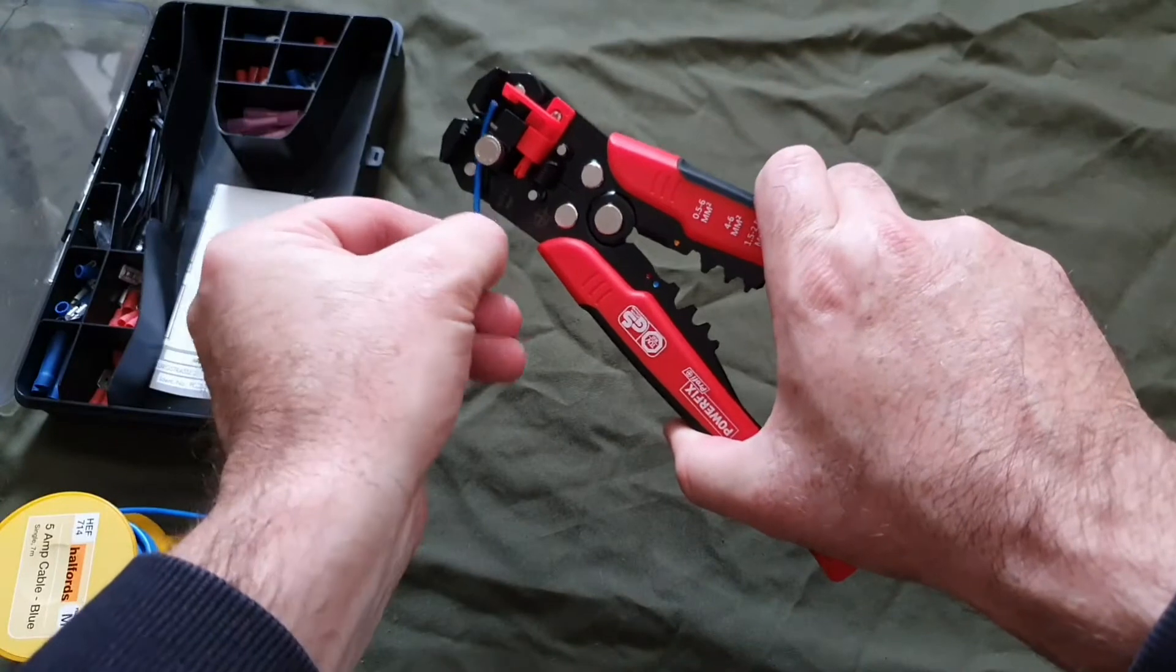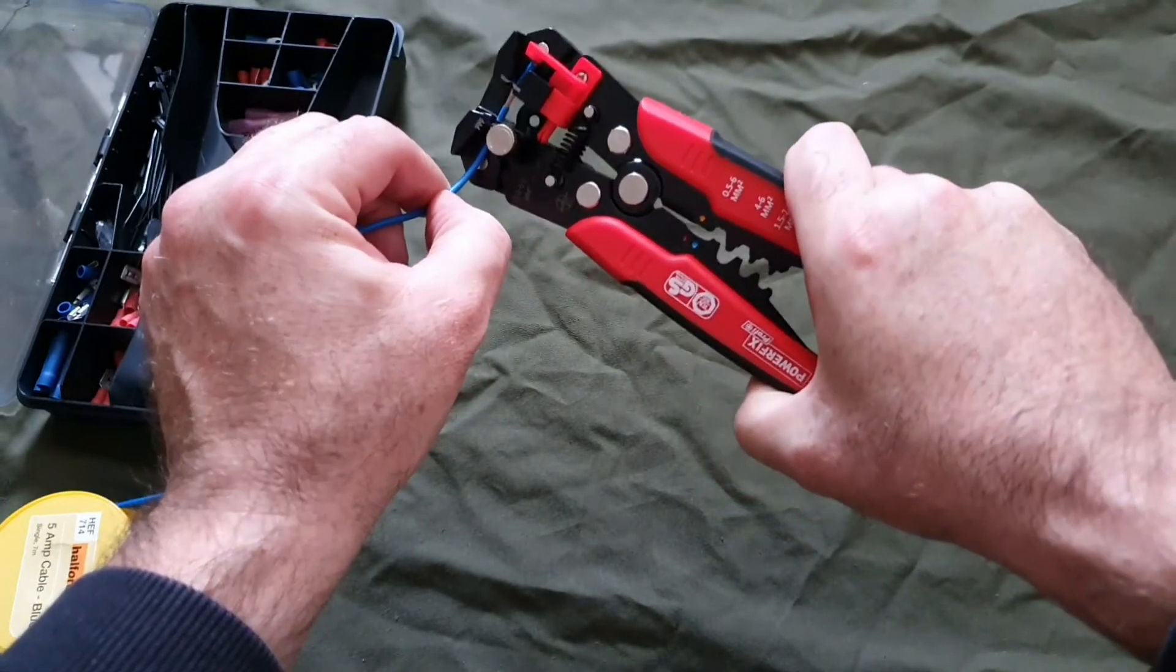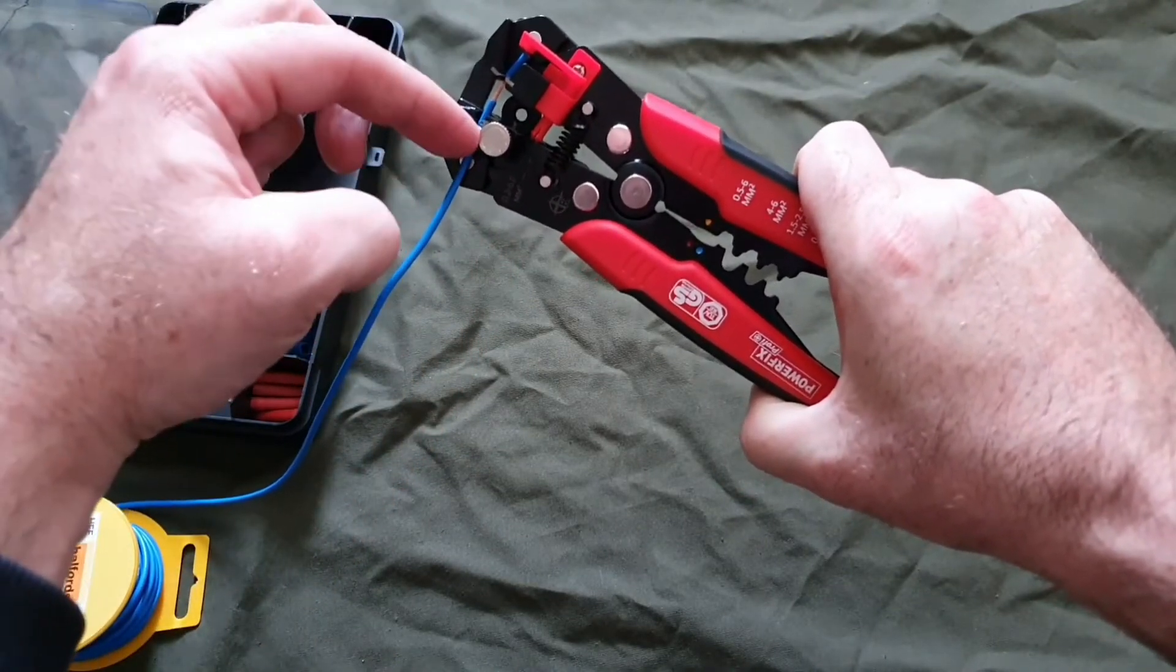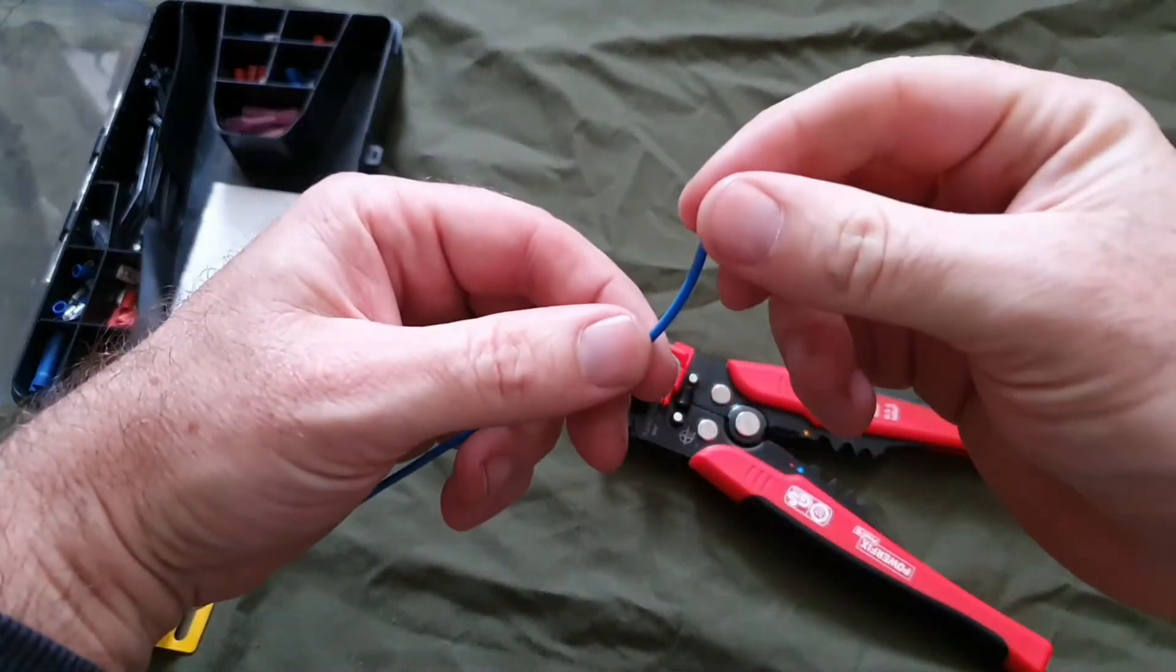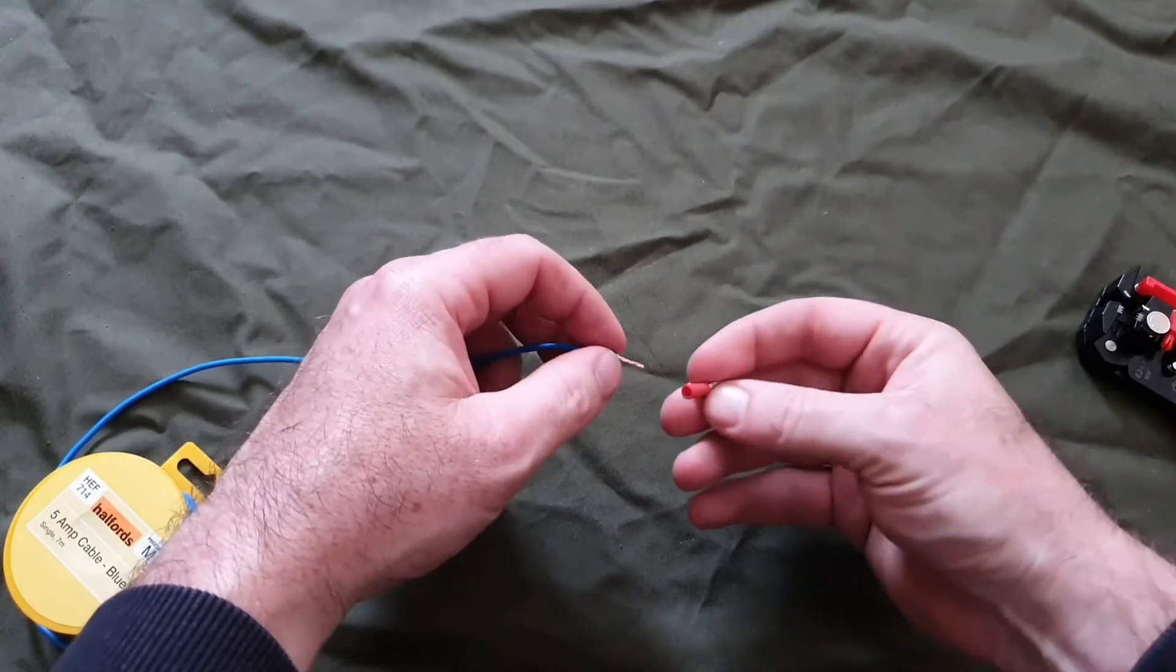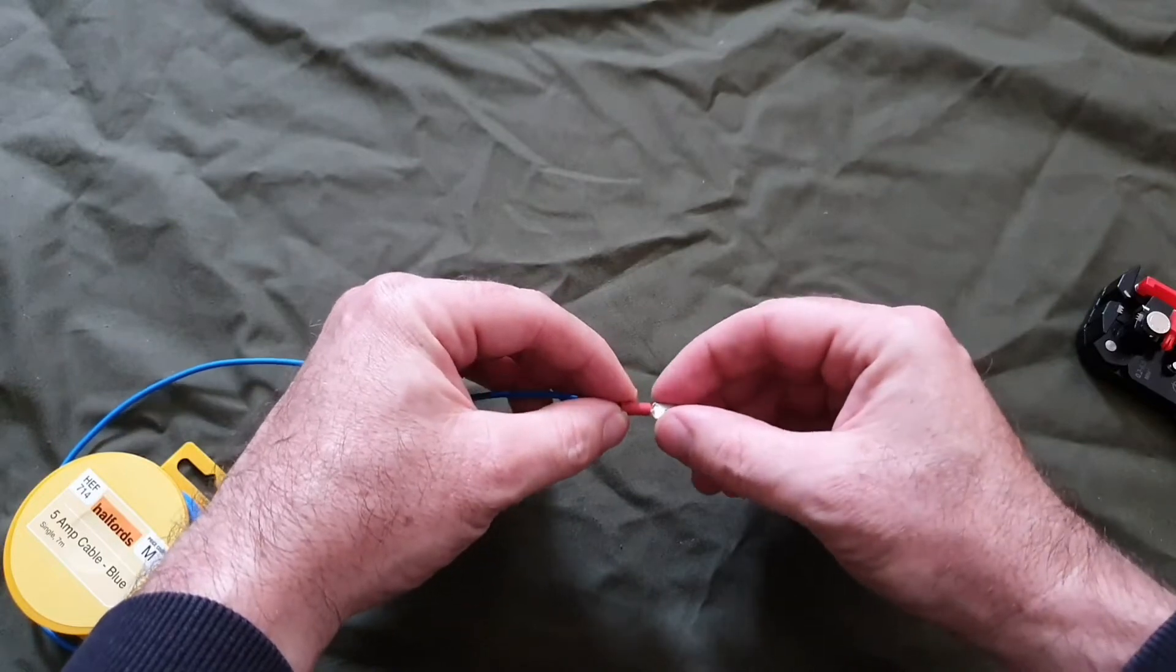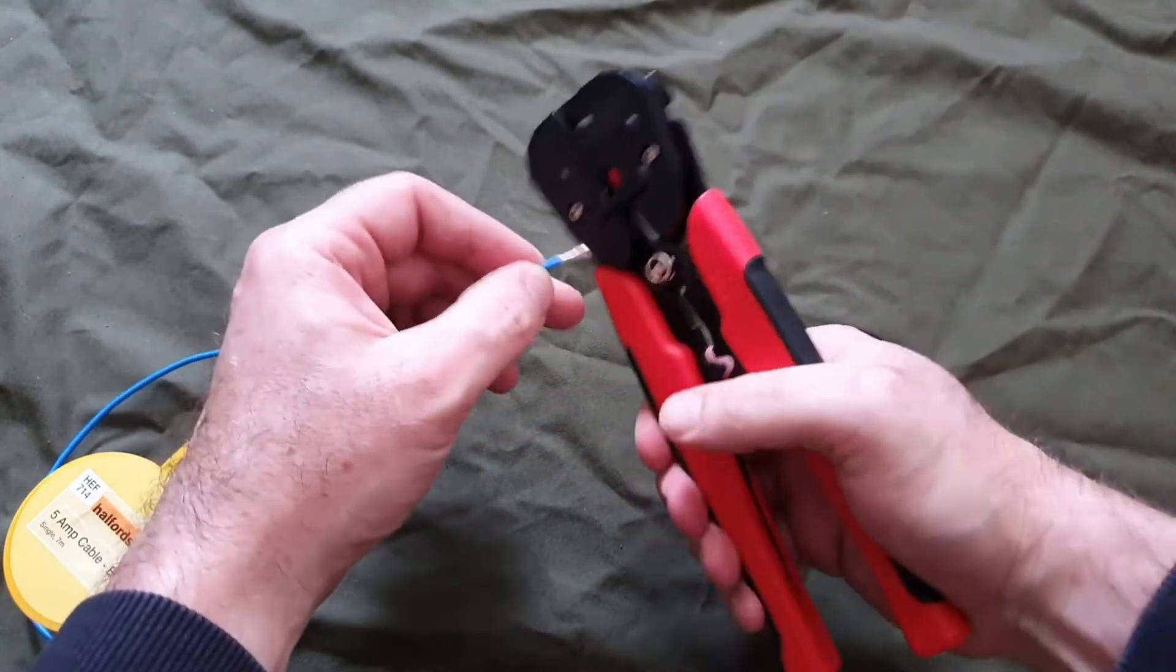Place your wire in there so it gets to the red stopper, then as you pull down on it, this one cuts through the sleeve whilst this one grabs the wire and separates them, giving a nice clean end. We just twist that a little bit and that will simply fit inside there.